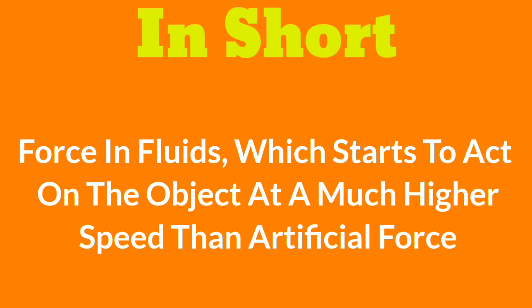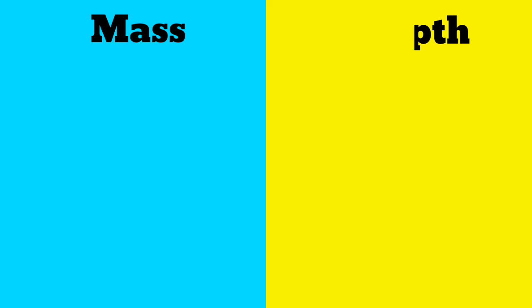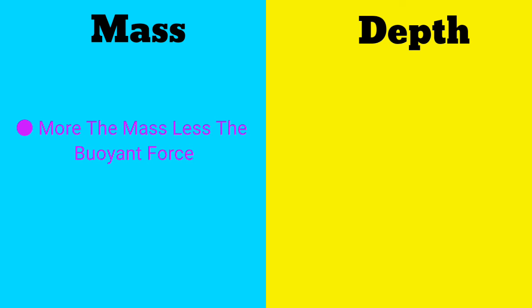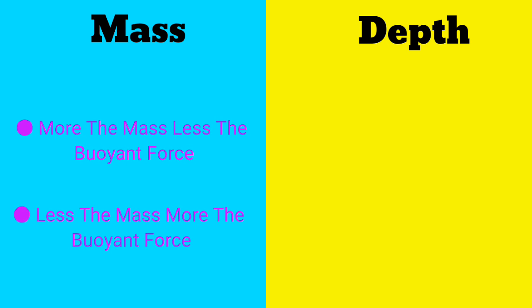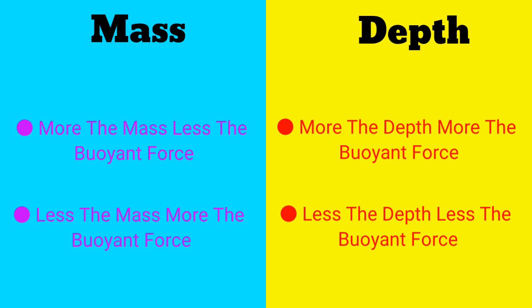It also depends on the mass and depth of the object, and this brings us two factors of buoyancy. First depends on mass, and second depends on depth. More the mass, less the buoyant force, and less the mass, more the buoyant force. In the same way, more the depth of the object, more the buoyant force, and less the depth of the object, less the buoyant force.